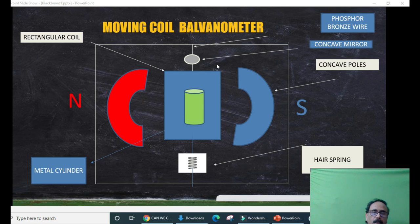The light falls on concave mirror and the image of the concave mirror will also be deflected along with the concave mirror. In the lamp and scale arrangement, we can find out the deflection of the coil.